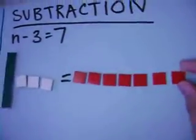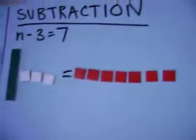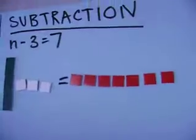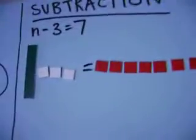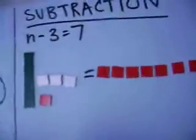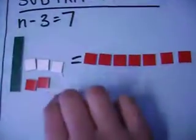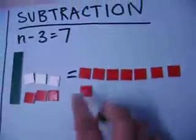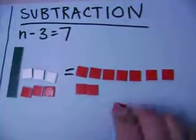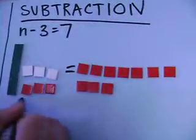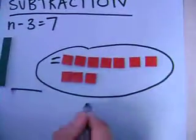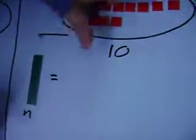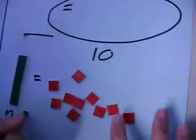Now, subtraction is a lot like addition. All we have to do is add positive three, which is the opposite of negative three, and we add this to both sides. As you see, these two cancel out, and now we are left with ten. N equals ten.